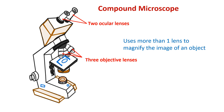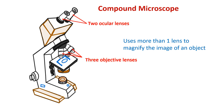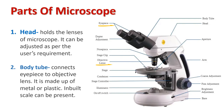A compound microscope is a microscope that uses more than one lens to magnify the image of an object. Since it uses multiple lenses, it is called the compound microscope. The first part of the compound microscope is the head. This part holds the lenses of the compound microscope.